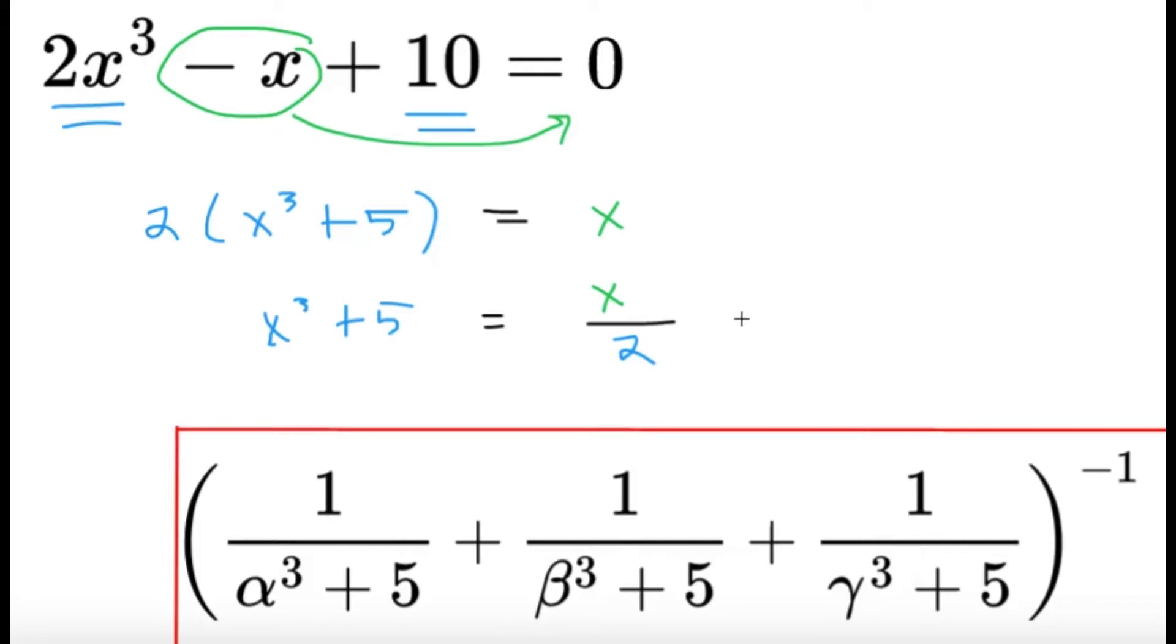well, we have to take the reciprocal of this. So I'll get that 1 over x cubed plus 5 would be the same as 2 over x. So I know that 1 over alpha cubed plus 5 is going to be 2 over alpha, 1 over beta cubed plus 5 is going to be 2 over beta, and same thing for the gamma.